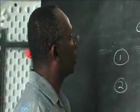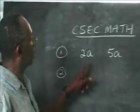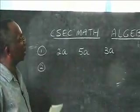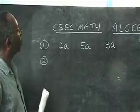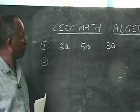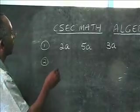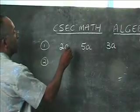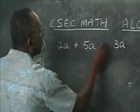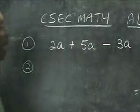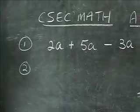You will notice on the board that we have three terms: 2a, 5a, and 3a. We are going to be simplifying. If we put two signs here, we actually have 2a plus 5a minus 3a.